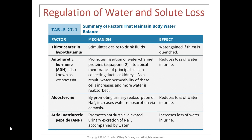When blood pressure is high, extra blood volume stretches the wall of the right atrium, releasing atrial natriuretic peptide (ANP). ANP targets the kidneys and promotes sodium loss in urine, called natriuresis. ANP also increases glomerular filtration rate so filtrate moves through the renal tubule more quickly and water is lost in urine, increasing urinary output and bringing blood volume back to normal.